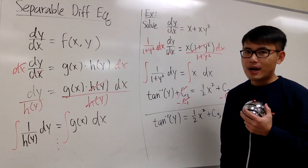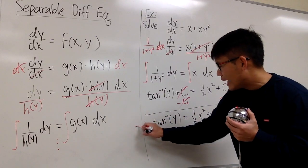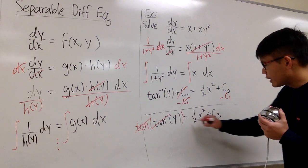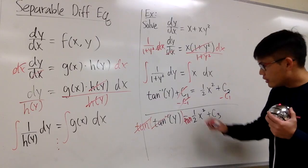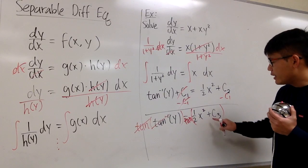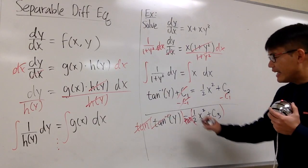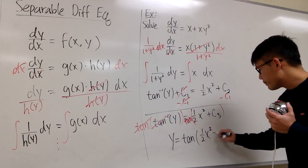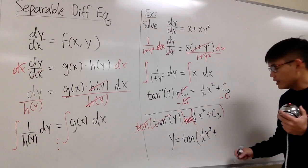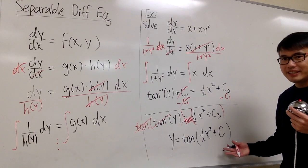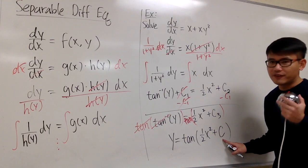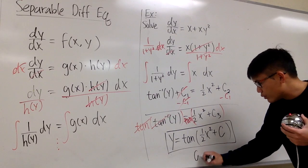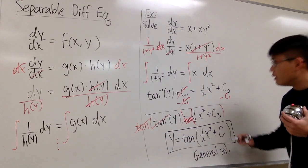This is not bad to isolate y, so let's do that. We take the tangent of both sides so that the tangent and the inverse tangent cancel. Be sure to put both the ½x squared and plus c3 inside the parentheses. At the end you'll have y equals tangent of (½x² plus c). This is what we mean by the general solution for this differential equation.